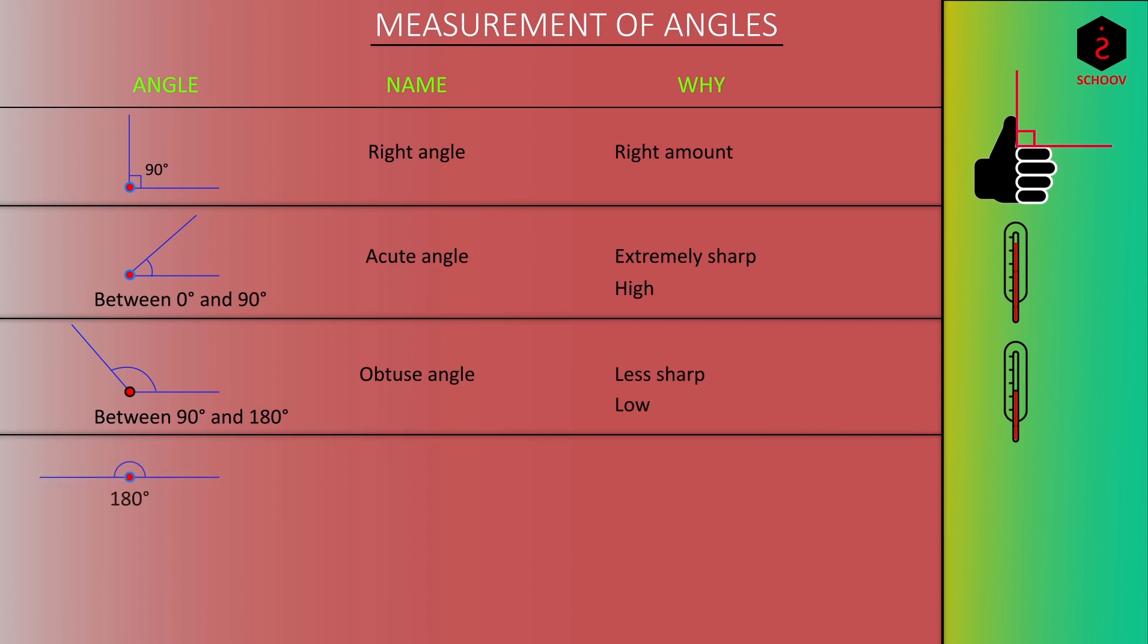An angle of 180 degree is called a straight angle because the two arms of the angle make a straight line.